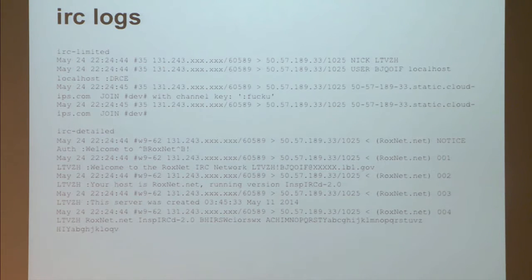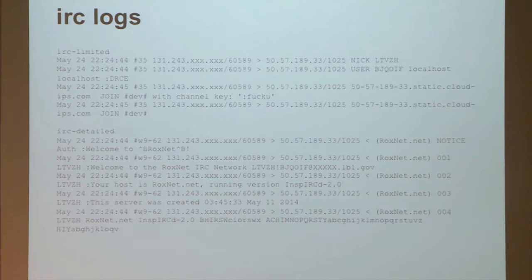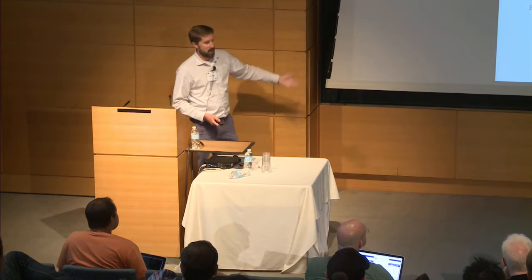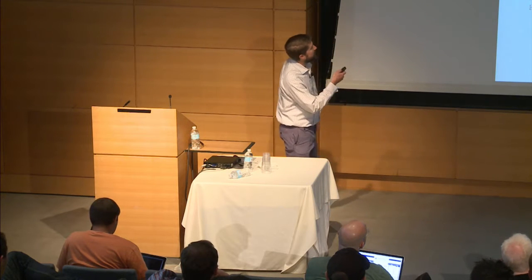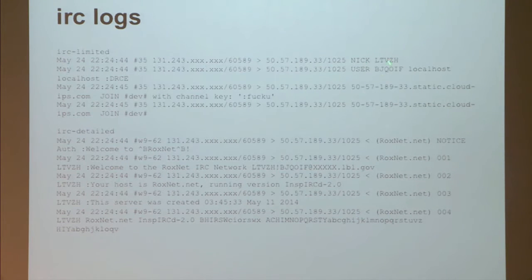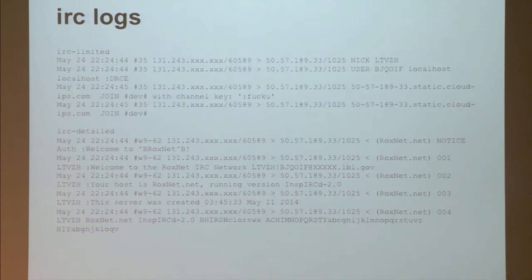Once Meterpreter got on the machine, one thing the attackers did was put an IRC bot on it and connect back to their mothership. We have IRC logging built into Bro — Ashish ported it forward from Bro 1.5.3 into 2.0. Back when IRC bots were all the rage we'd pull out attacks all the time using the IRC logs. You can see in the IRC log the user logging in, where they're going, and basic details. A second log called IRCDetailed has the full text of the connection.